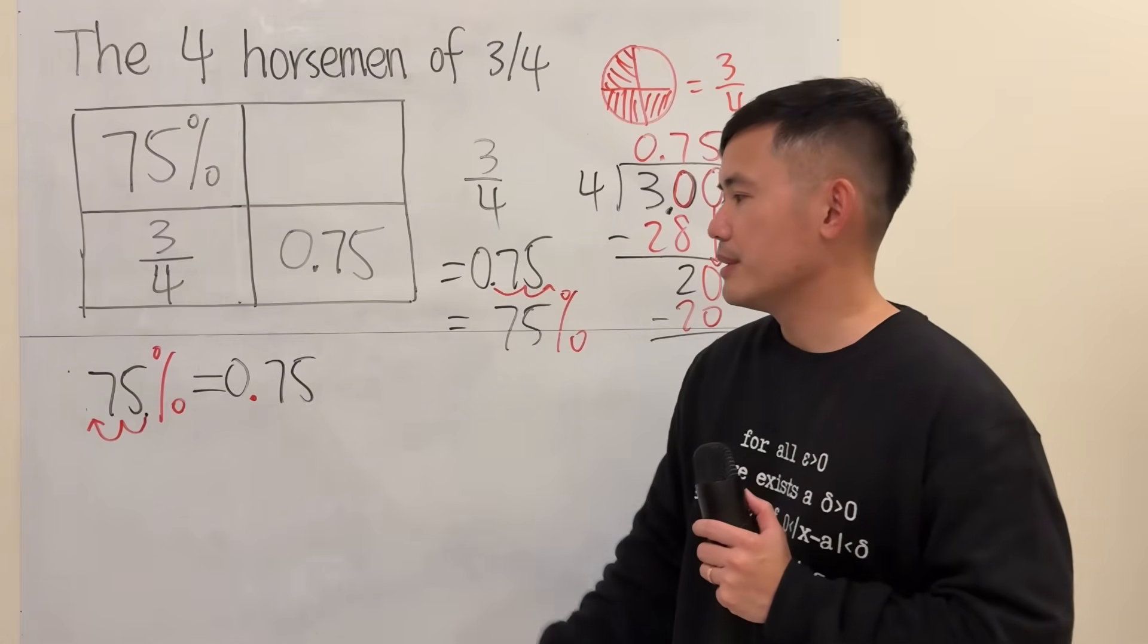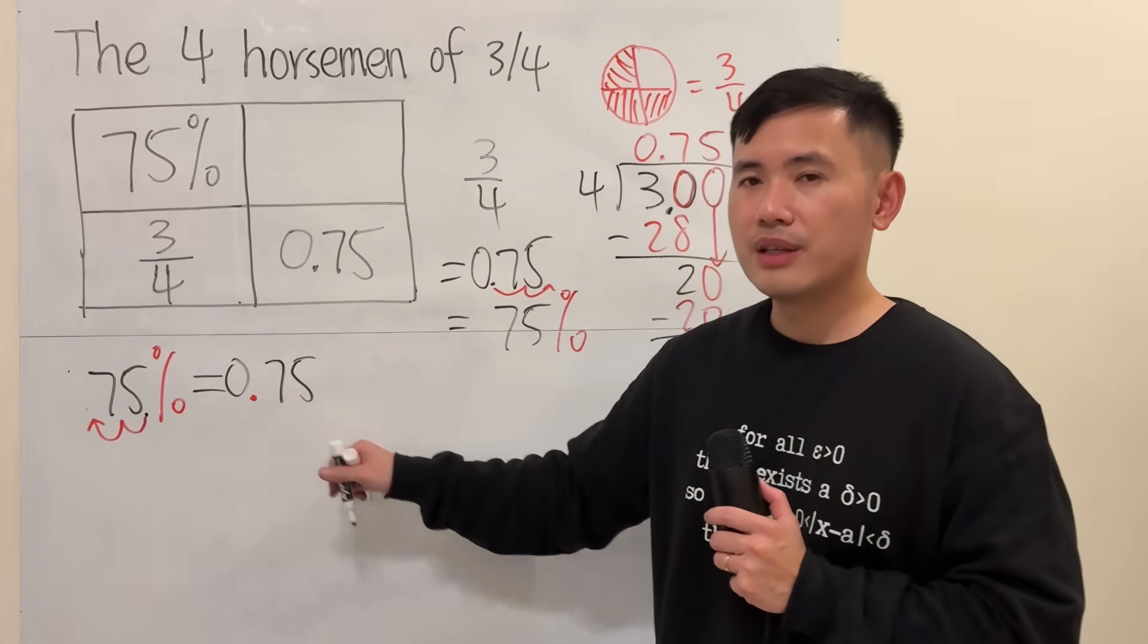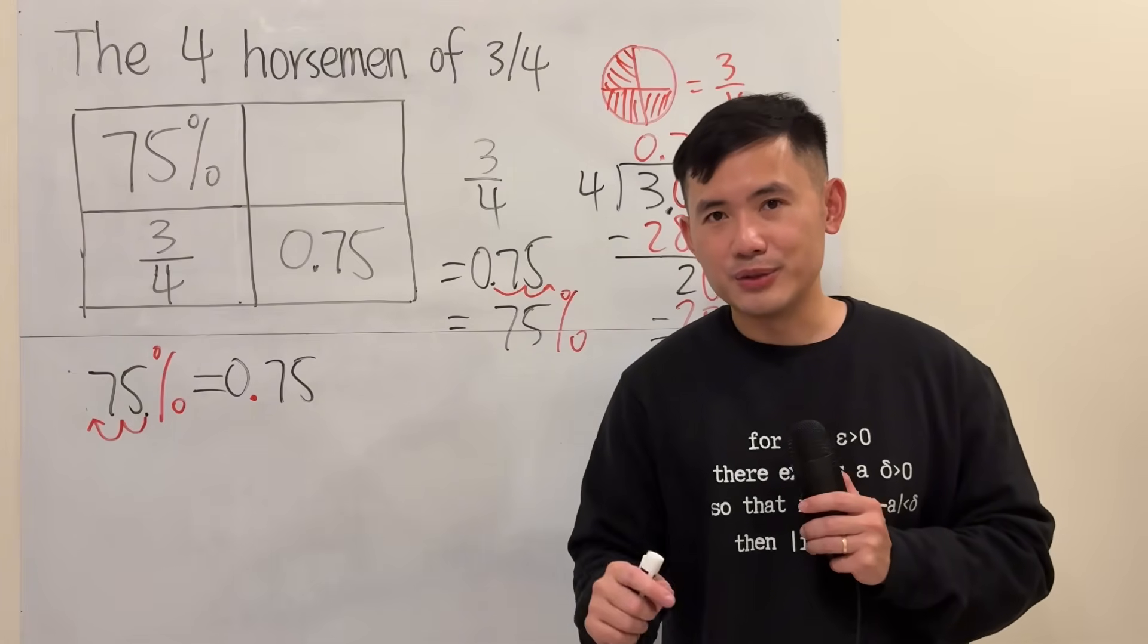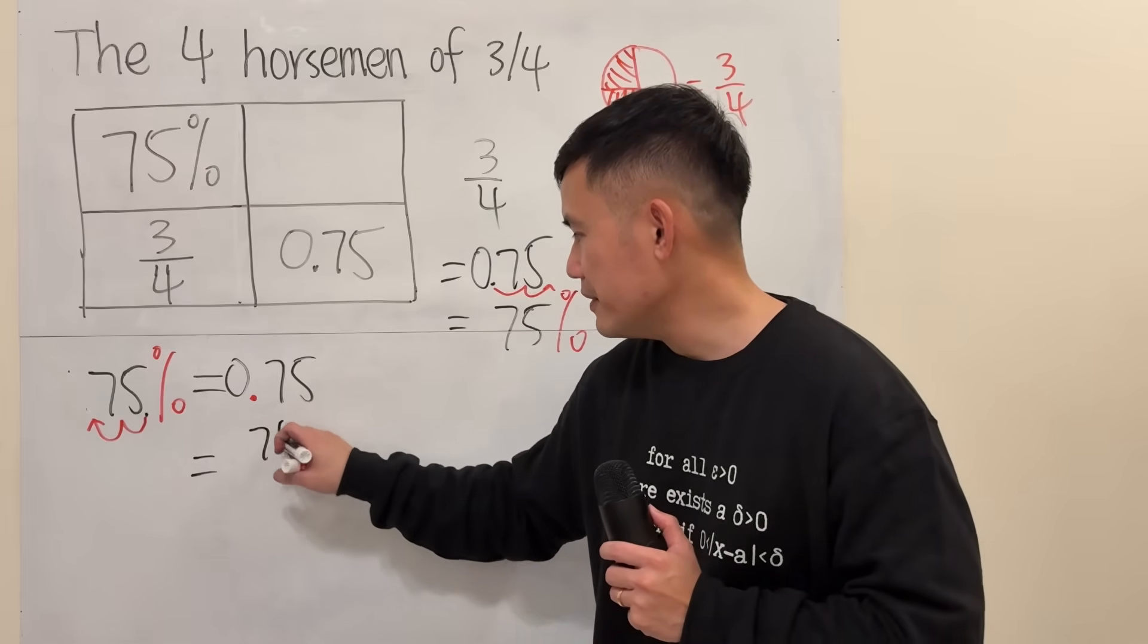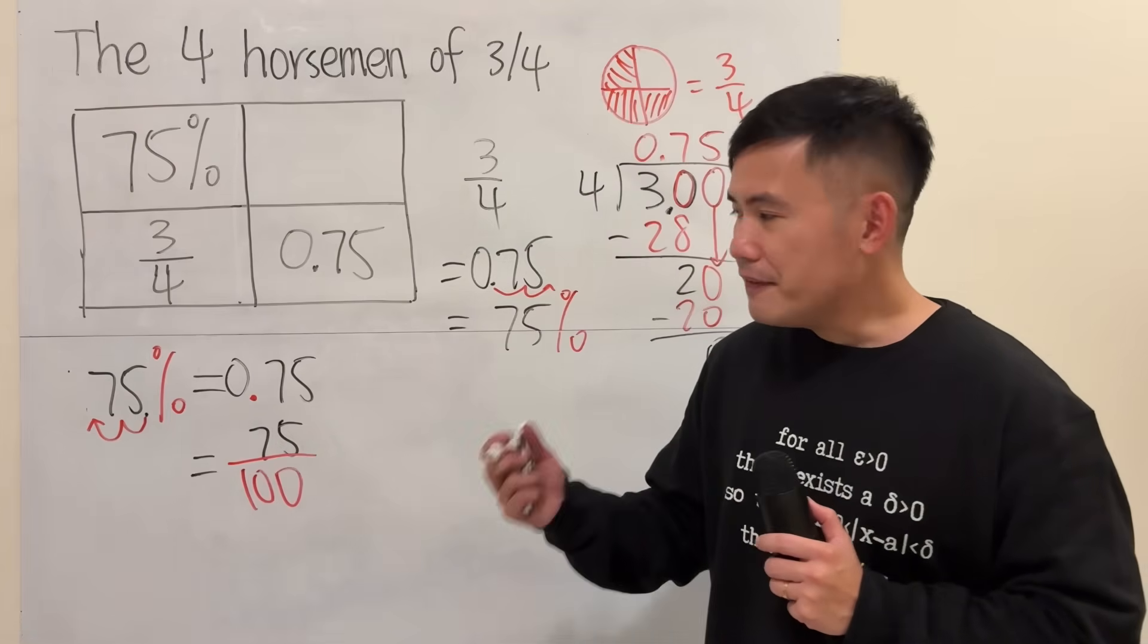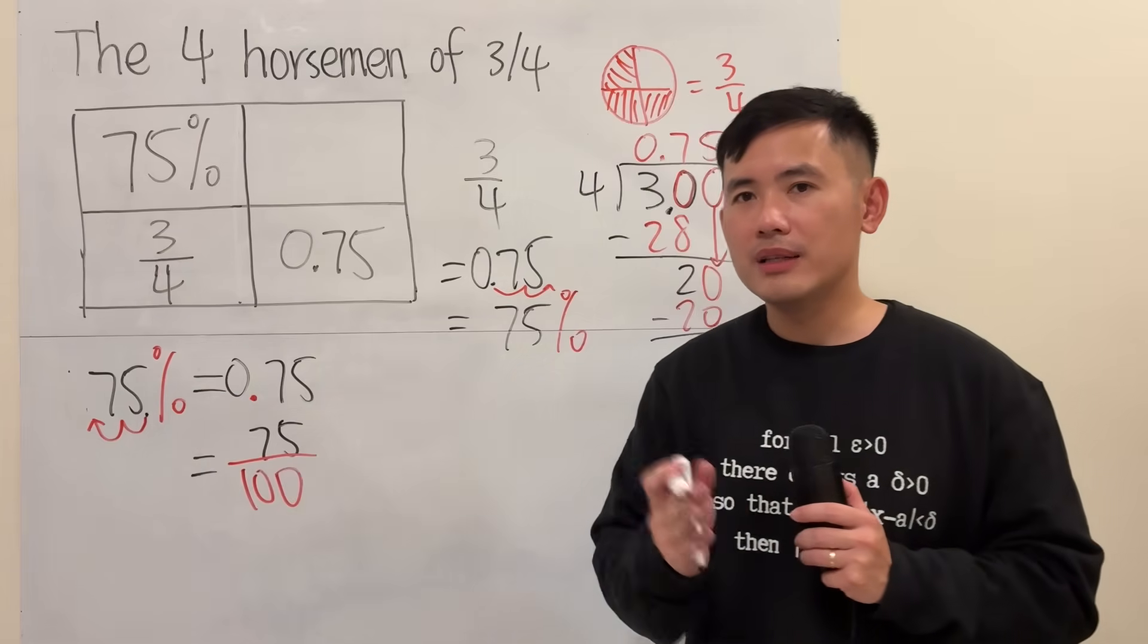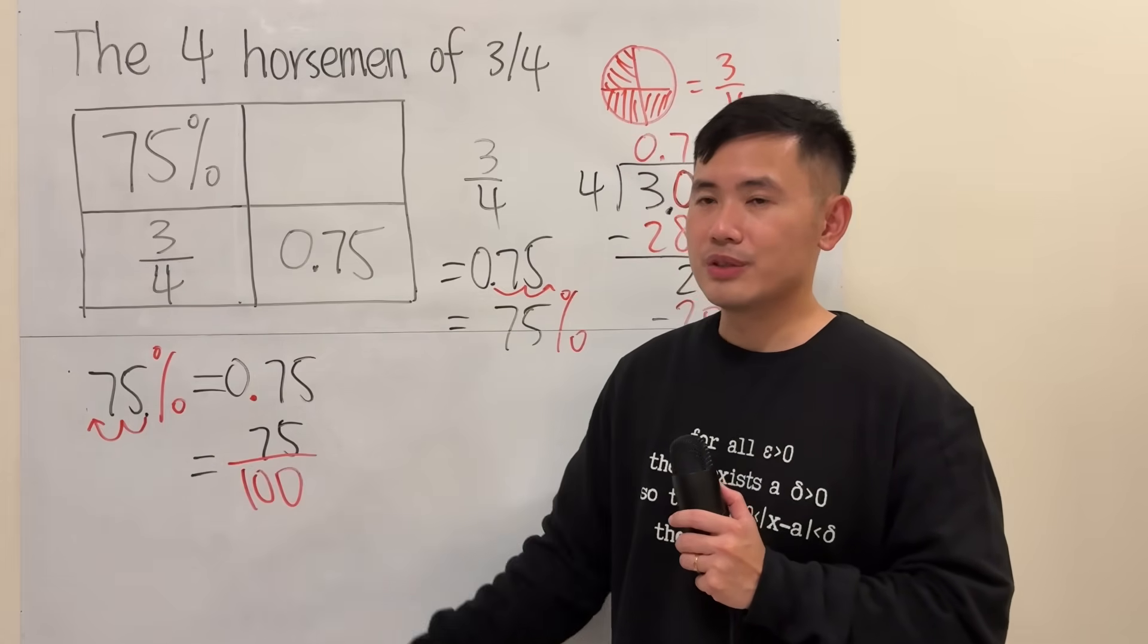Now, how do you get to a fraction? When you have 0 and then 2 decimal places, just divide it by 100. This is how I like to remember it. Just keep the 75 and divide it by 100. And in fact, when you have percent per 100, so this tells you to divide it by 100 as well.